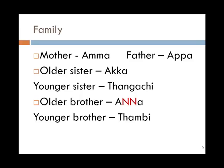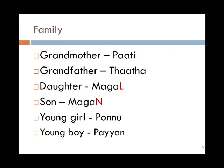Now let's look at family members. Mother is 'amma', father is 'appa', older sister is 'akka', younger sister is 'tangachi', older brother is 'anna', younger brother is 'tambi'.